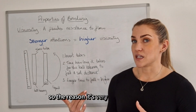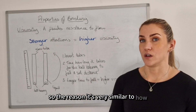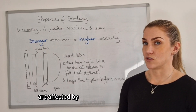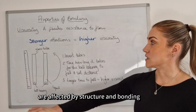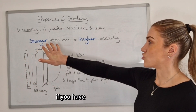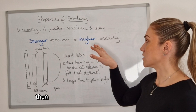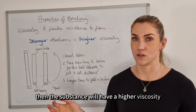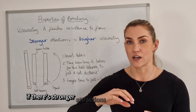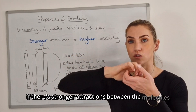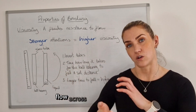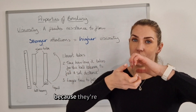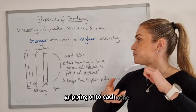The reason viscosity is similar to melting and boiling points in terms of structure and bonding is that if you have stronger attractions between molecules, the substance will have a higher viscosity. If there are stronger attractions between the molecules, they're not going to flow across each other as easily because they'll be gripping onto each other.